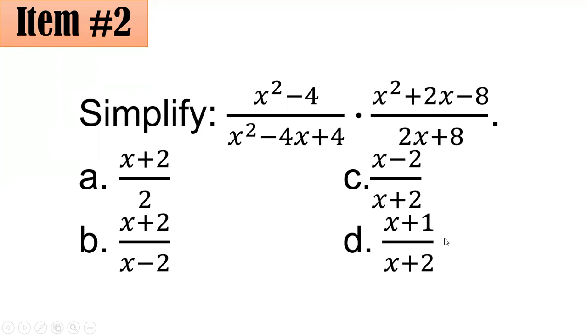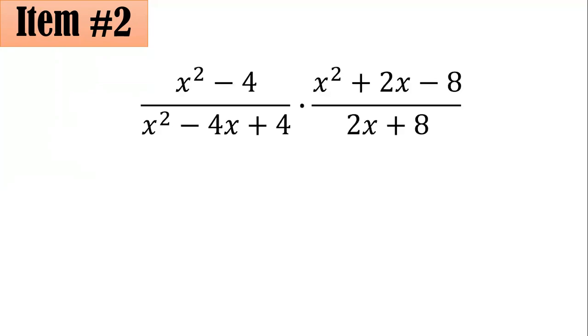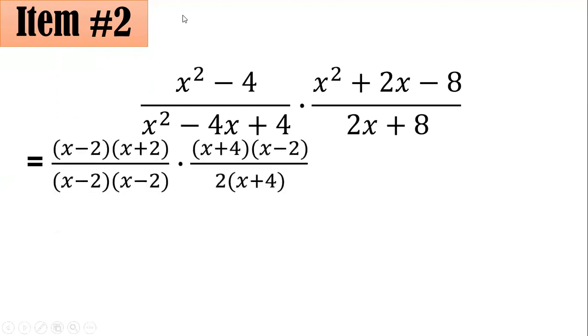For this case, it is important that we use factoring. We have to factor polynomials whenever possible and divide like terms in the numerator and denominator if possible. So for x squared minus 4, this is a difference of two squares which is factorable as x minus 2 times x plus 2. x squared minus 4x plus 4 is in fact a perfect square trinomial. It could be factored as x minus 2 times x minus 2 or x minus 2 quantity squared.